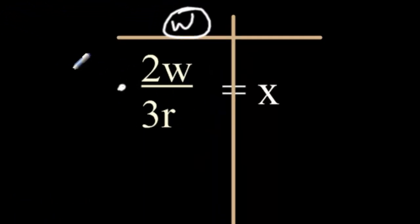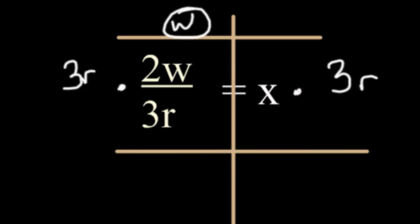This is division of 3r. To cancel it out, multiply both sides by 3r, because that's the inverse operation. From here, start a new line, and the 3r's on the left, they cancel out.